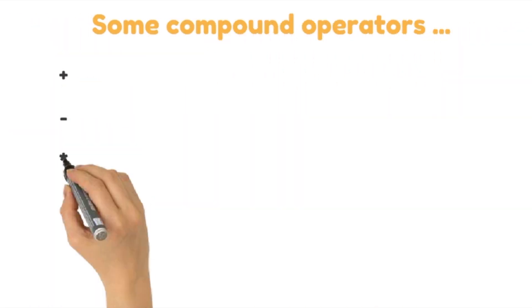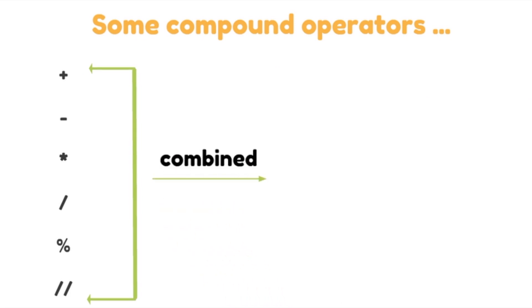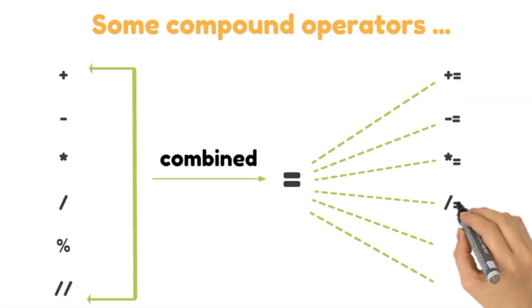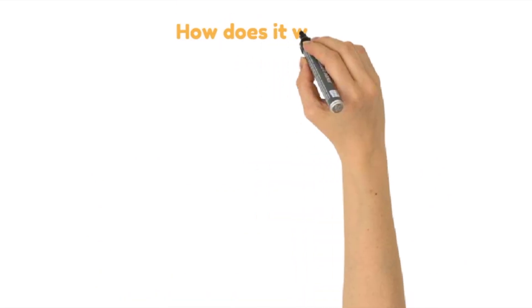However, there are also some compound assignment operators. Compound operators are a result of combining one of these arithmetic operations with an equal to, which creates its respective assignment operator. Let's check how they work.